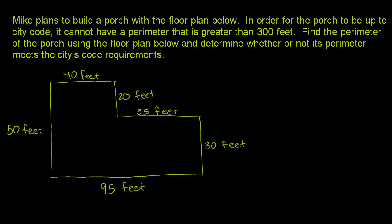Mike plans to build a porch with the floor plan below. In order for the porch to be up to city code, it cannot have a perimeter that is greater than 300 feet. Or another way to think about it, the perimeter has to be 300 feet or less.